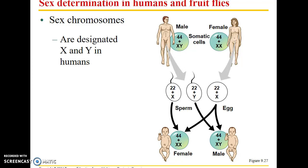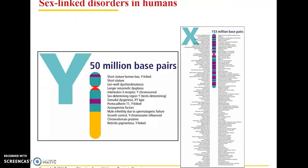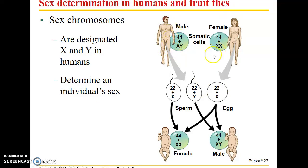Let's talk briefly about sex determination in humans and fruit flies. Different species have different chromosomes associated with biological sex. In humans, X and Y chromosomes determine sex. We have 44 non-sex chromosomes plus two sex chromosomes. Males have one X and one Y; females have two X chromosomes. A female can only contribute an X, while a male can contribute either an X or a Y — so it is ultimately the male that determines the sex of the offspring through random chance.